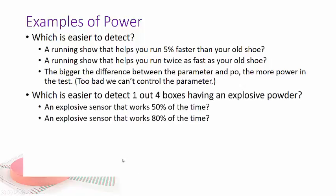Which is easier to detect one out of four boxes having an explosive powder. So you remember us talking about this example. Well an explosive sensor that works 50% of the time or one that works 80% of the time. Well I think you would probably be able to detect both of them. But the 80% would definitely be easier to detect. There's more power in determining an 80% accurate sensor compared to a 50% accurate sensor.